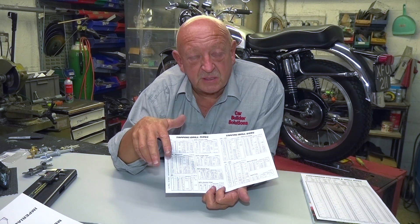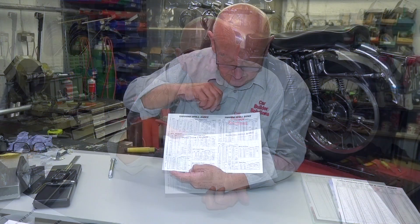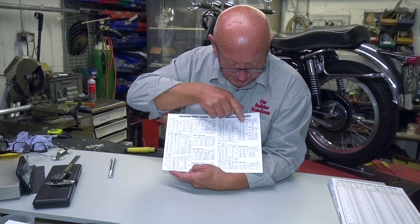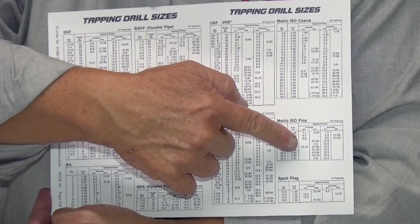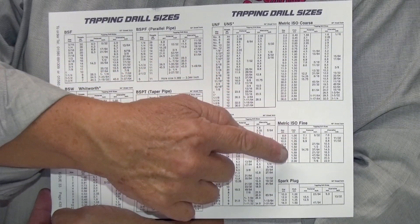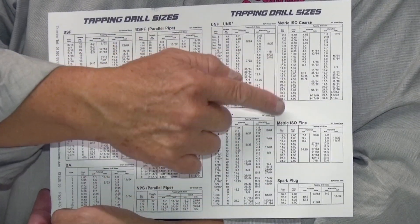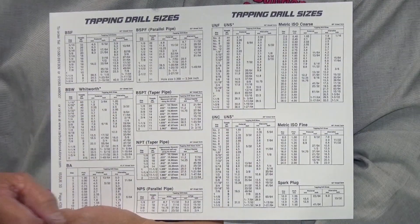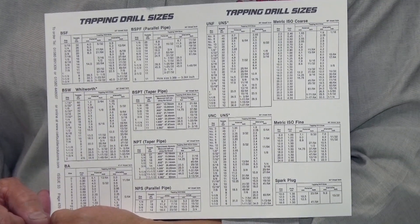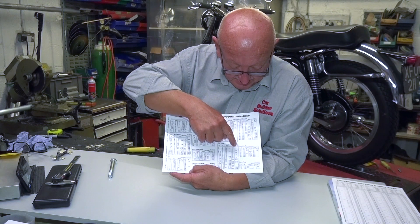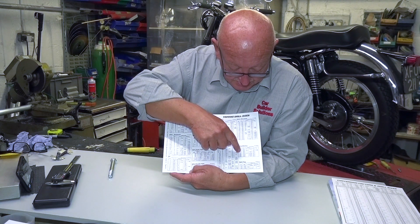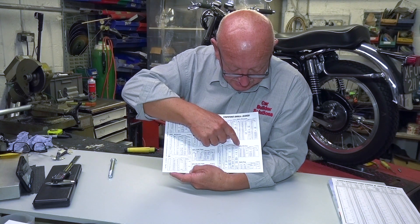But more recently metric has become the most popular system pretty much all over the world. Over on this side we've got metric coarse and metric fine. In the second column are the pitches from 0.4 right up to 4mm in the coarse, and 1mm pitch to 2mm pitch in the fine.